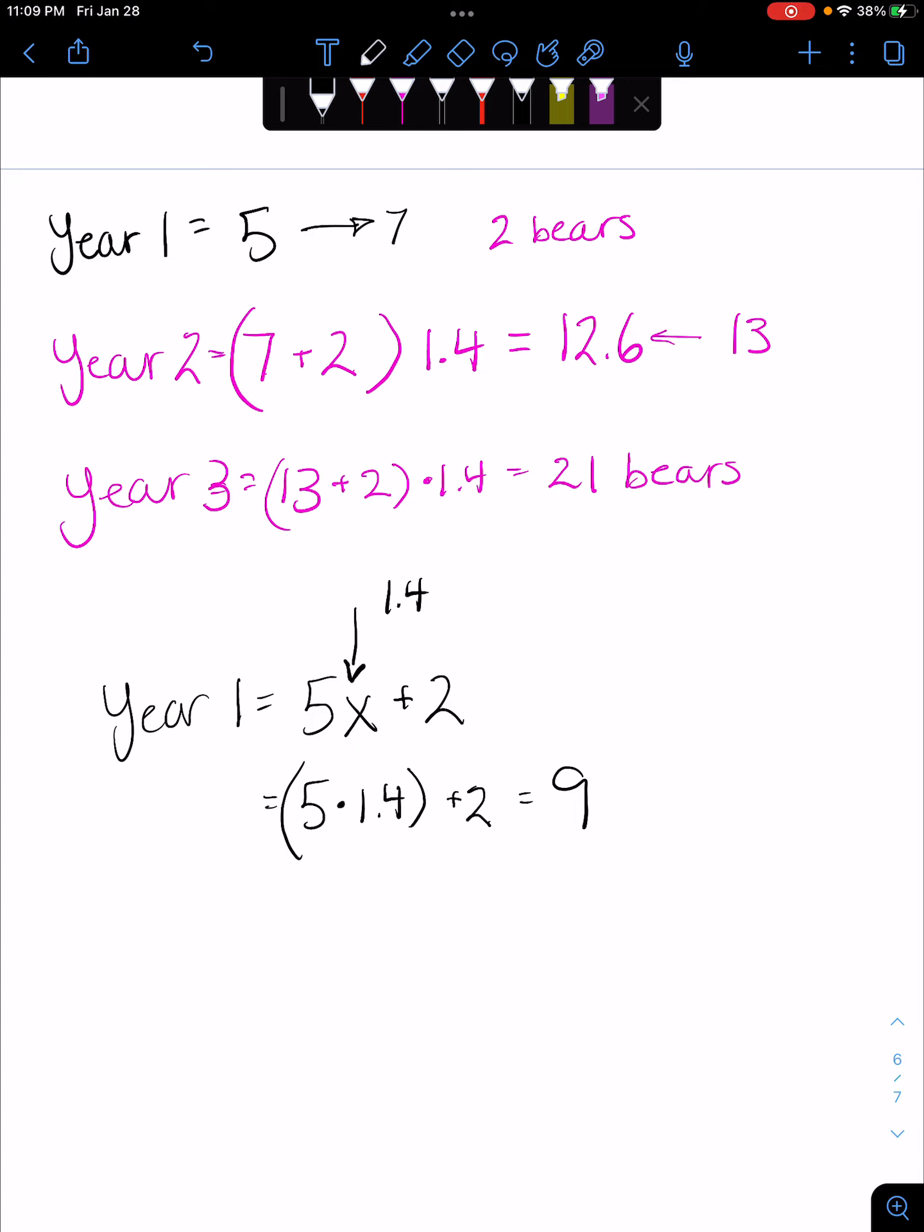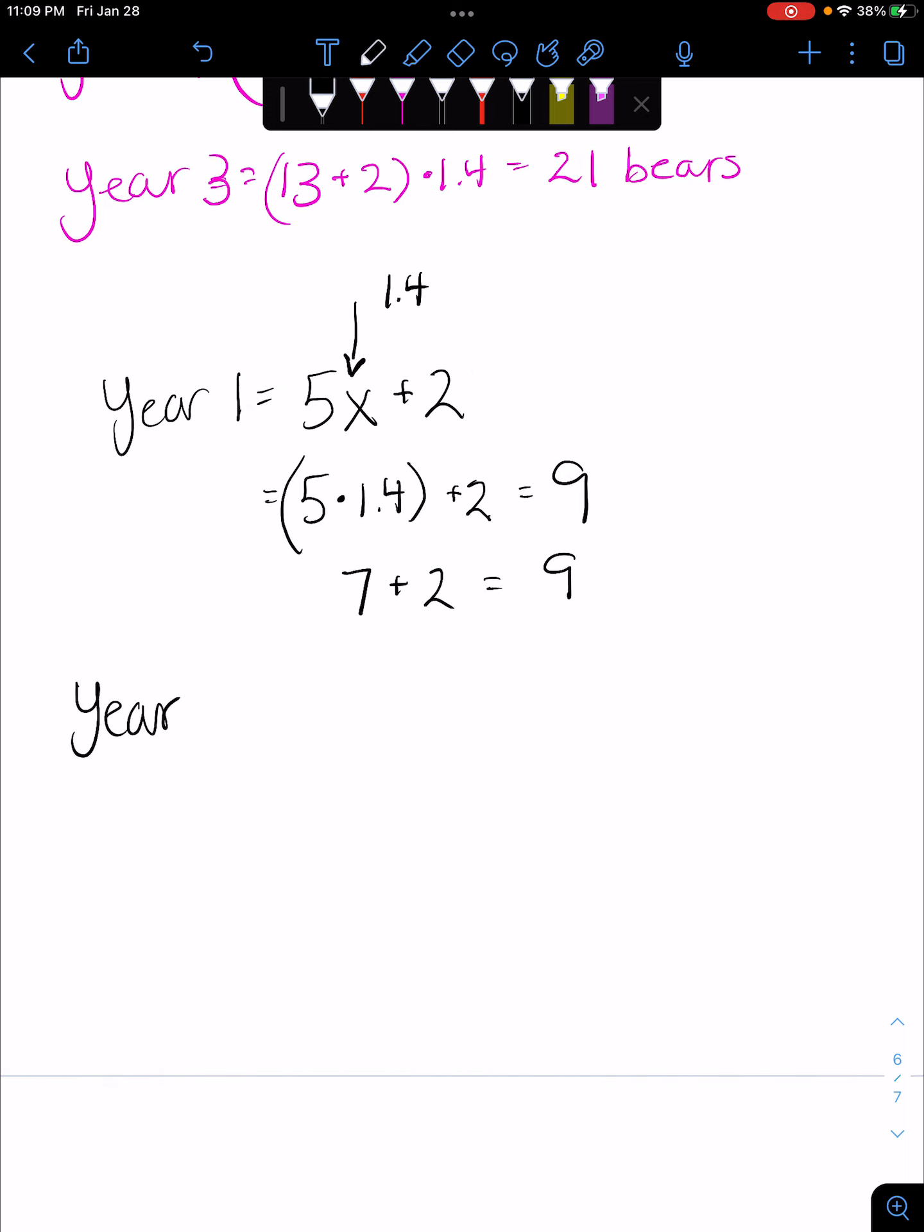Two, that equals nine. We know this is seven from the previous calculations, but we'll do it again. Five times 1.4 is seven plus two, that's going to equal nine. Year two is we start with nine, we throw in our offspring calculation because those two bears, they're good now, they're settled, they can have children, but we're gonna throw in two extra bears that are not quite settled.